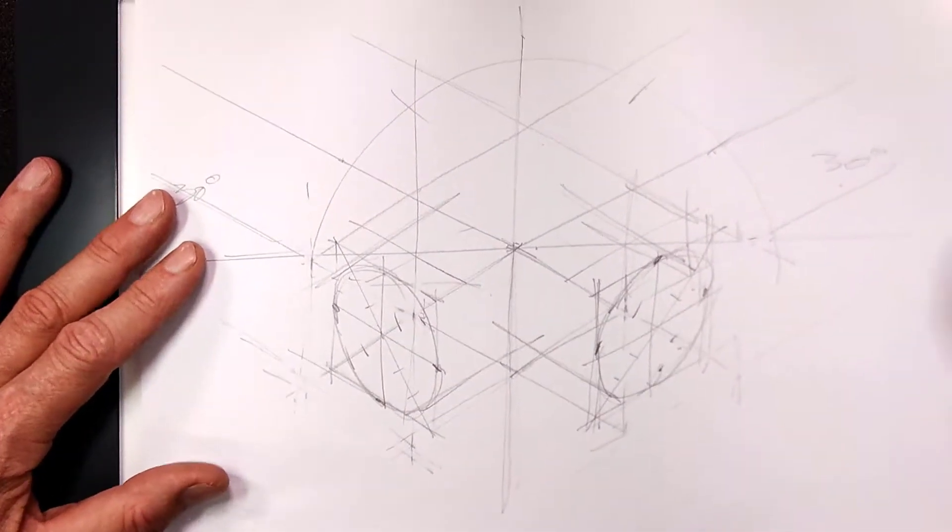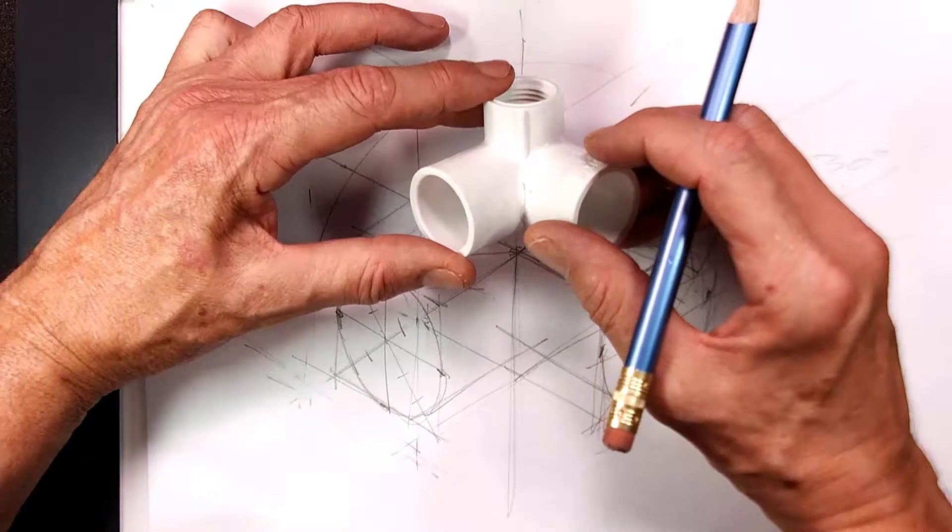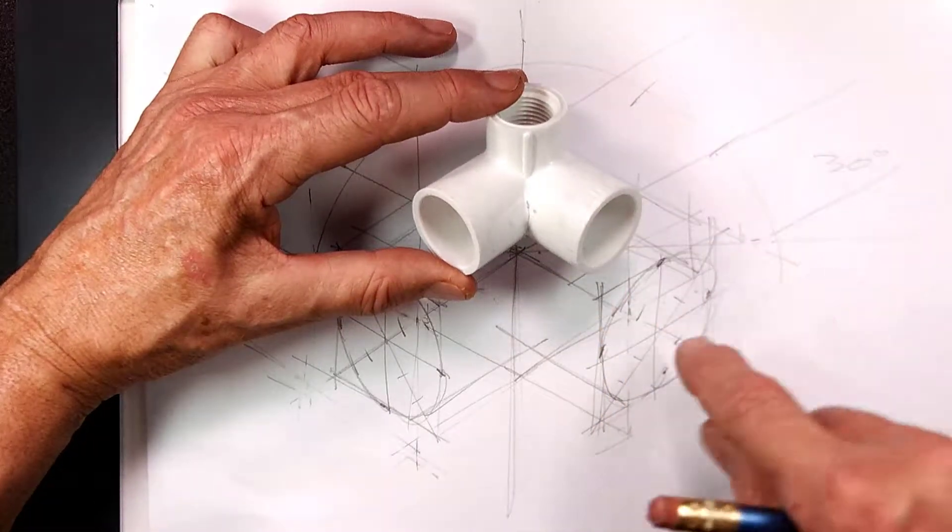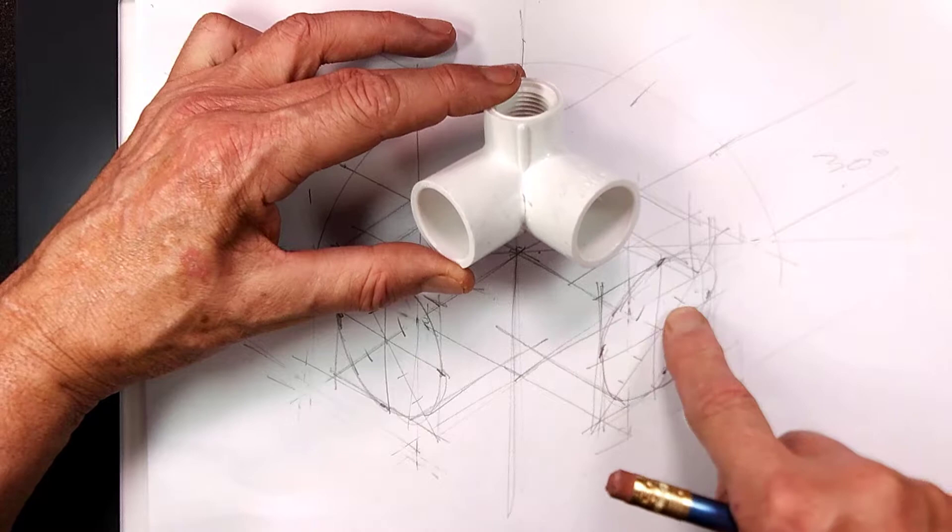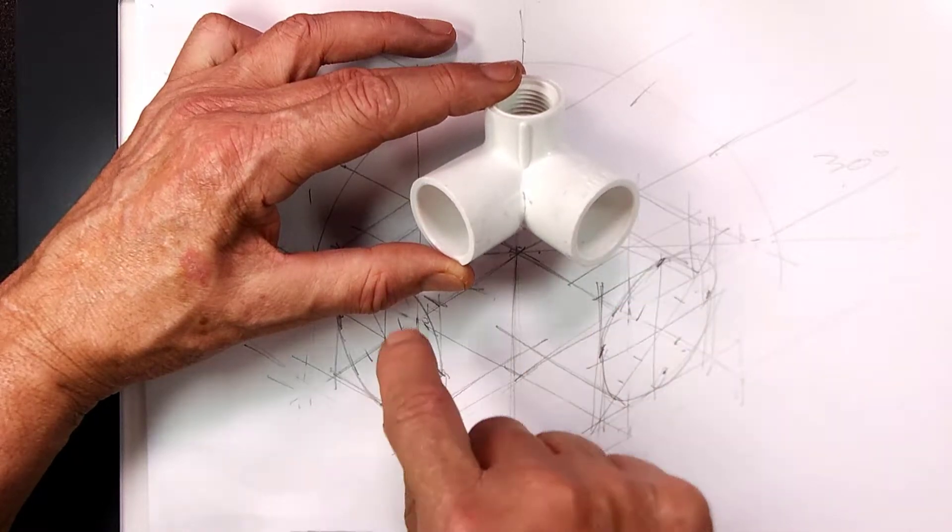So what we have now is this. This is what the isometric is going to look like, approximately. You see, this is the ellipse representing that. This is the ellipse representing that.